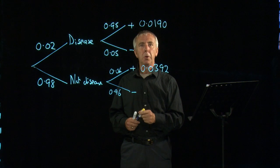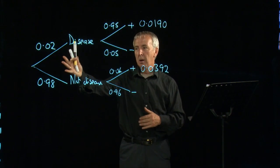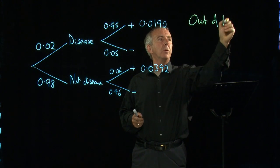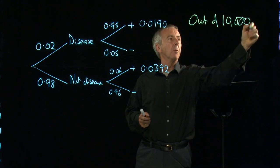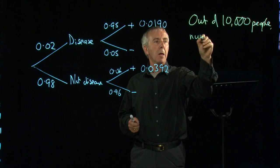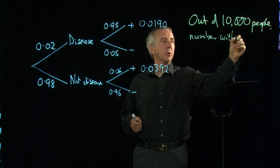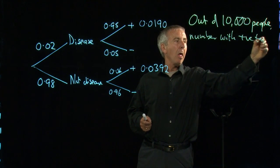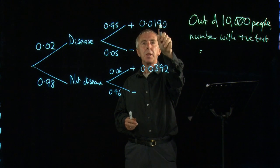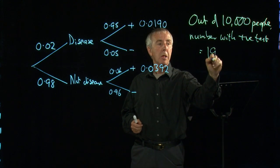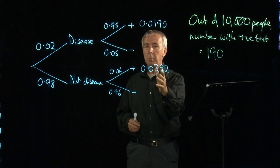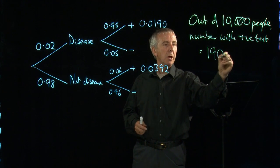Suppose 10,000 people had been analyzed from the population. So out of 10,000 people, the number with positive test results, well here, if you multiply by 10,000, we get 190. And here, the other group who come out with positive test results, we get 392.